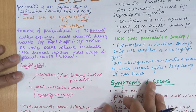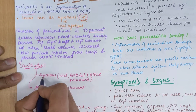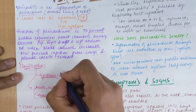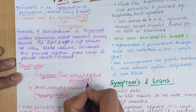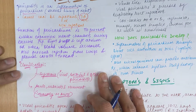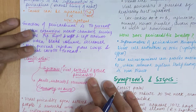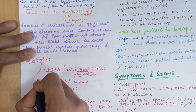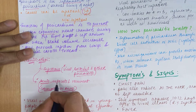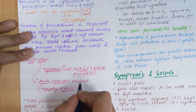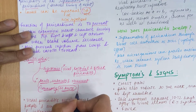In terms of classification, infectious pericarditis can be viral — most commonly — then bacterial, and others such as fungal or parasitic, which are less common. According to duration, we have acute, subacute, and recurrent types of pericarditis. The most commonly seen type is acute pericarditis.